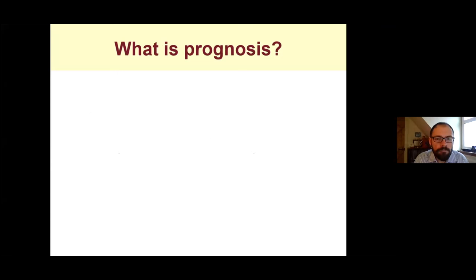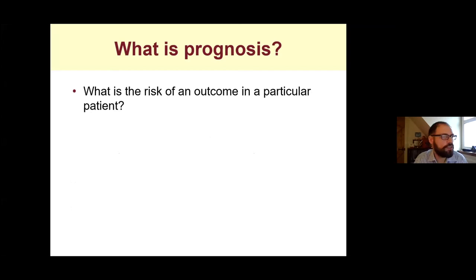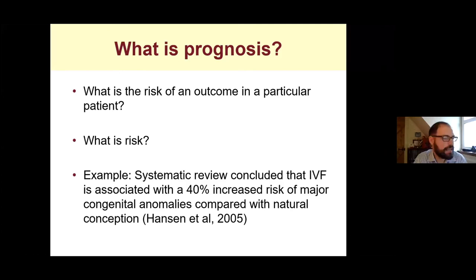What is prognosis? It's just another way of saying: what is the risk or probability of some outcome happening to a particular patient in the future? The best way to define risk is to go through an example. In 2005, Hansen published a systematic review which concluded that IVF is associated with a 40% increased risk of major congenital anomalies compared with natural conception. This 40% sounds quite high, but what does it actually mean?